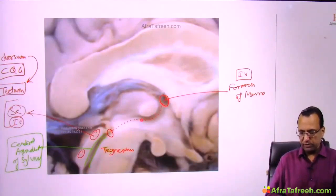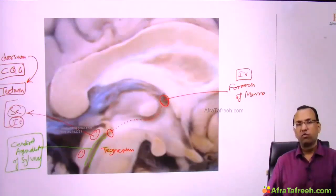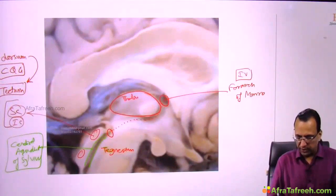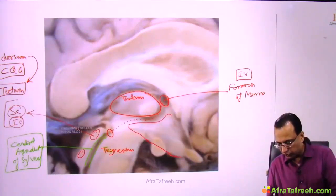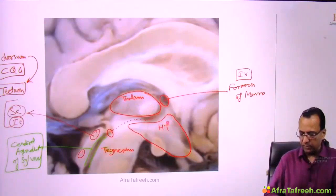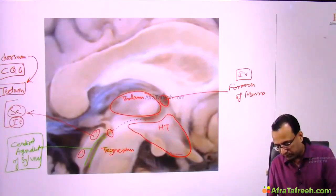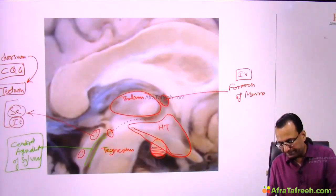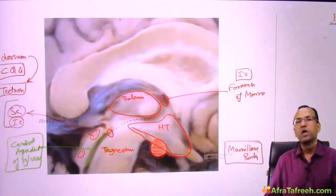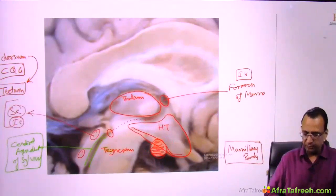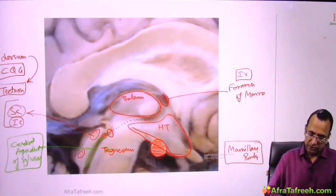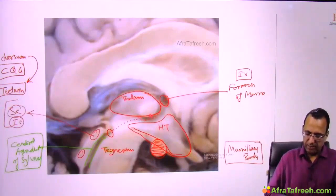The lateral wall of the third ventricle, which is the ventricle of the diencephalon — the thalamus forms the lateral wall. Below the thalamus is the hypothalamus. So the thalamus is the lateral wall of the third ventricle, and the hypothalamus is not only the lateral wall but also the floor. At the floor you can see the mammillary body, which is part of the hypothalamus.